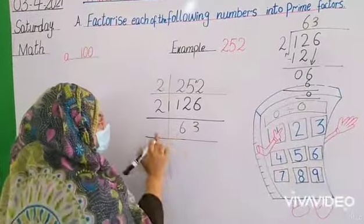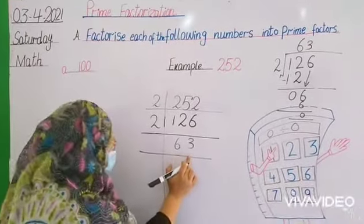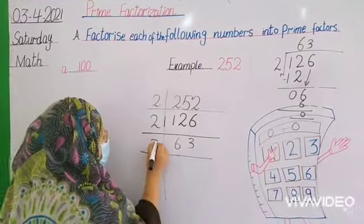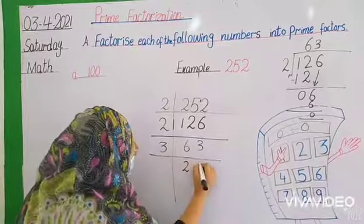You see, 6 comes in 2's table, but 3 doesn't. 6 comes in 3's table, and 3 also comes. So now we will use 3's table. 3 twos are 6, 3 ones are 3.